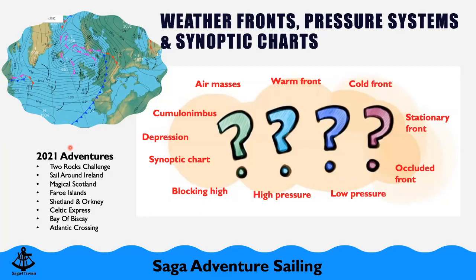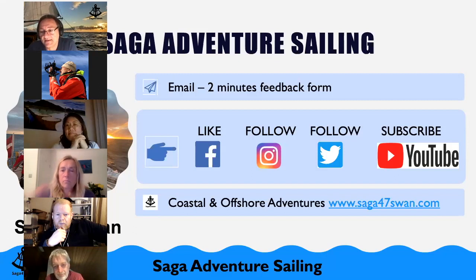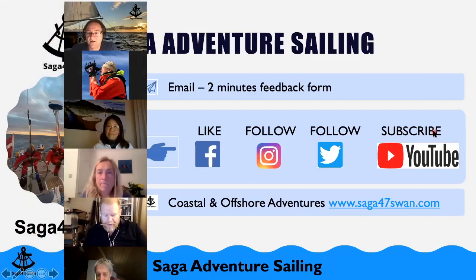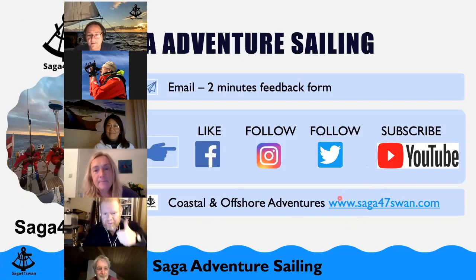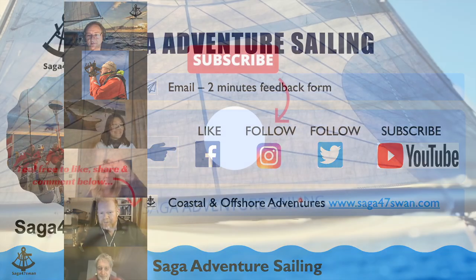The Bay of Biscay sea state can be like a washing machine. The main reason is that the Atlantic Ocean is very deep — several kilometres — and then as you get to the Bay of Biscay north of Spain, the depth suddenly rises to around 60 metres. That momentum of water coming in and suddenly hitting relatively shallow water creates the washing machine effect in a westerly wind. If unsure, don't leave port — always err on the side of caution with worst-case weather.